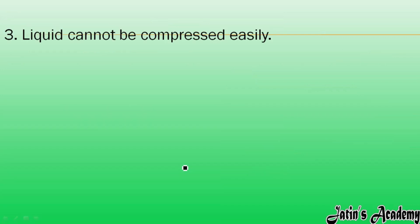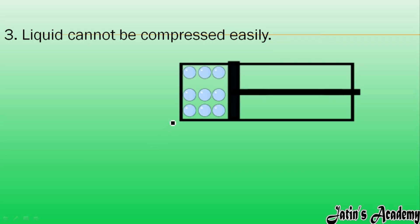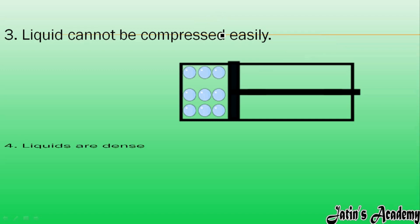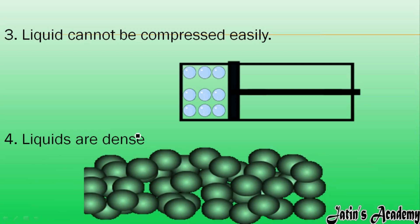The next characteristic is that liquids cannot be compressed easily. If I have a liquid like water in this beaker and I use a piston — this is the apparatus used to put pressure on the liquid particles — when I press the liquid particles, the liquid particles are not compressing. So we can say liquid particles cannot be compressed easily.